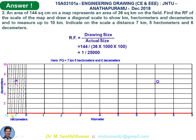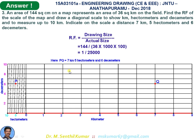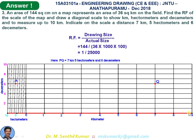For the diagonal scale, first draw the horizontal X line. Its total length equals 10 km × RF, which converts to approximately 400 mm, representing 10 km. Divide this line into 10 divisions — each division represents 1 km. Then subdivide the first division into 10 further subdivisions so each subdivision equals 1 hectometer.